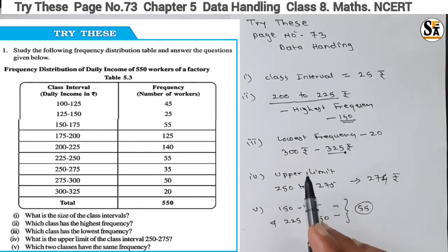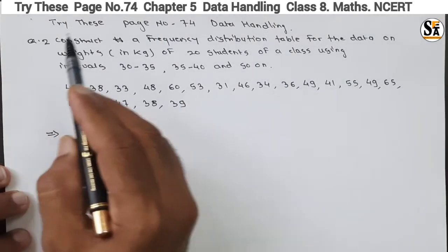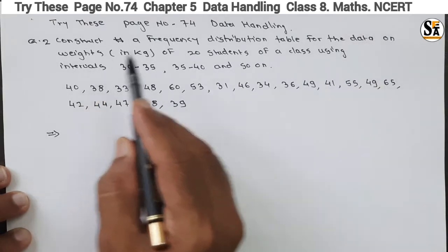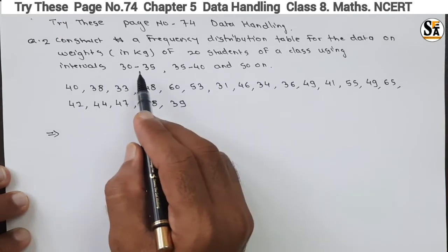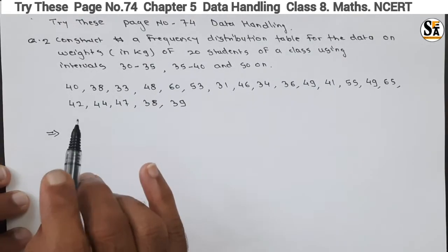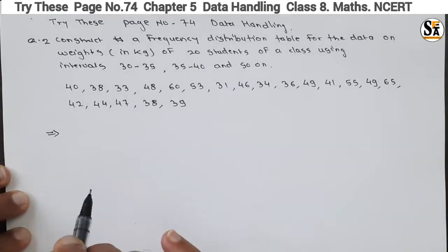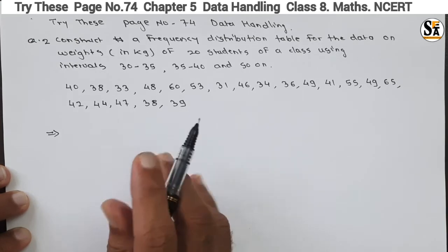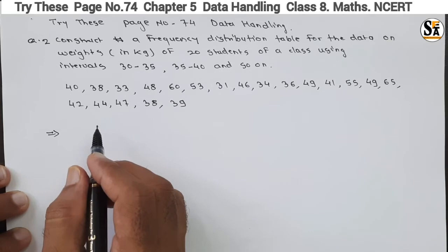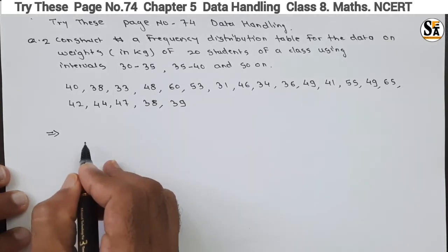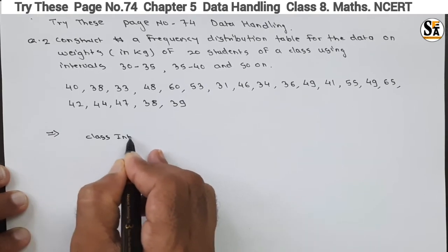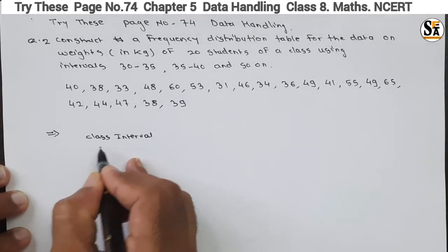With the help of a frequency table it is very easy to answer questions. Now the second question under 'Try This' on page number 74, Data Handling: construct a frequency distribution table for the data on weight in kg of 20 students of a class using intervals 30 to 35, 35 to 40, and so on. We will first draw a frequency table, grouping the data with a class interval of 5 kg.